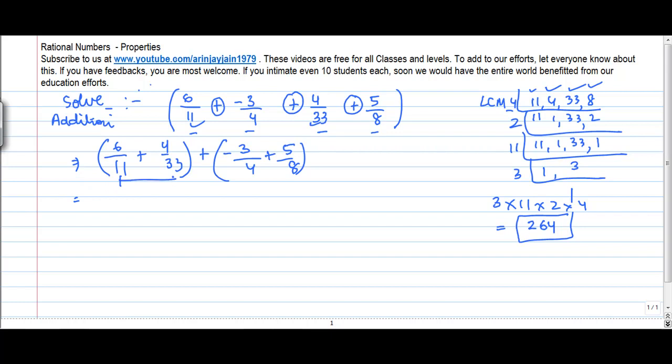But what it alters for me is that now I have to deal with these two numbers, 11 and 33, and I know that their LCM is 33. Look here, 11, 33. So, I do by 11, 1, 3, 3. 3 into 11 gives me 33.